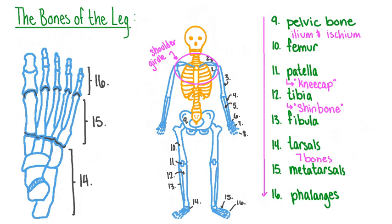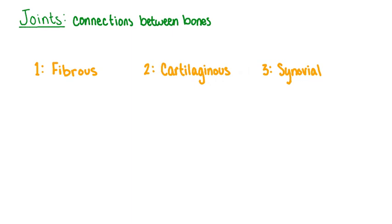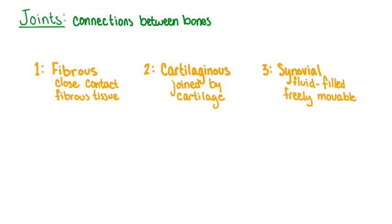Our bones provide support and structure to the body, but we couldn't move without the joints found between them. Joints are the connections between bones. There are three main types of joints in the human skeletal system: fibrous, cartilaginous, and synovial. Fibrous joints are generally found between bones in very close contact, connected by fibrous tissue. A cartilaginous joint is when two bones are joined by cartilage.